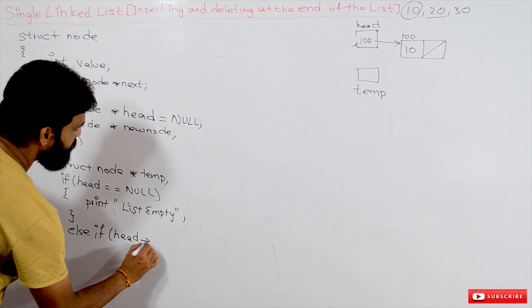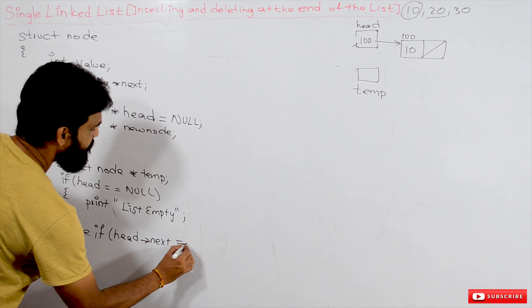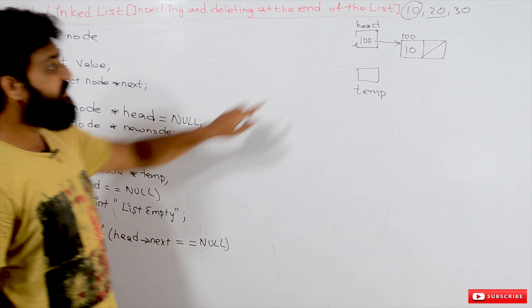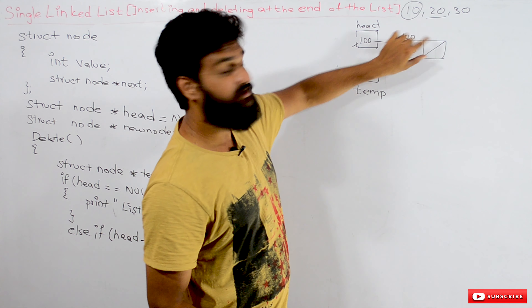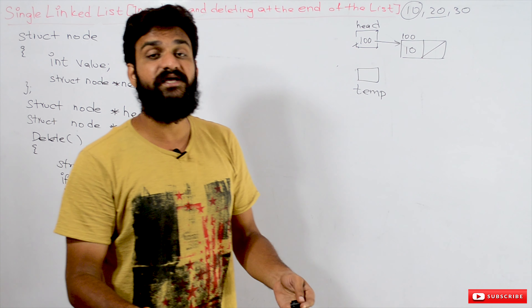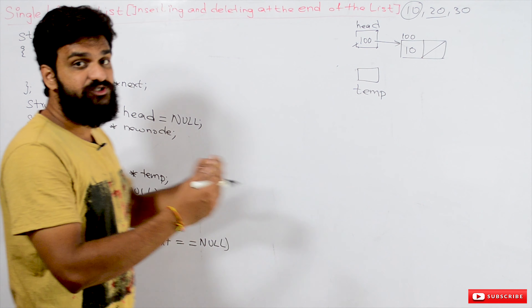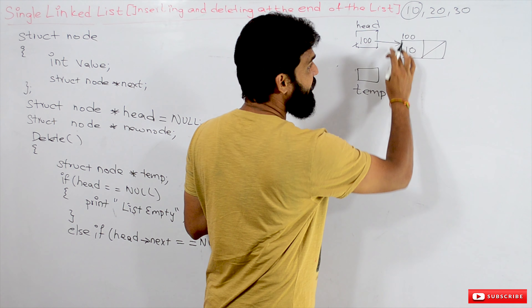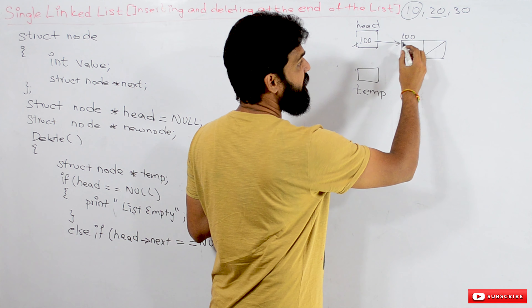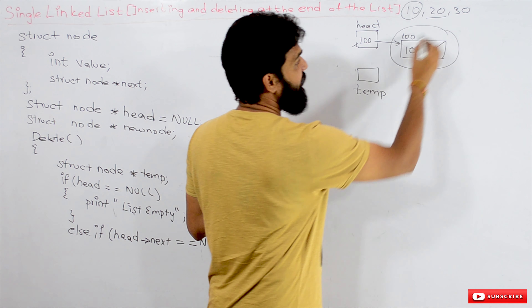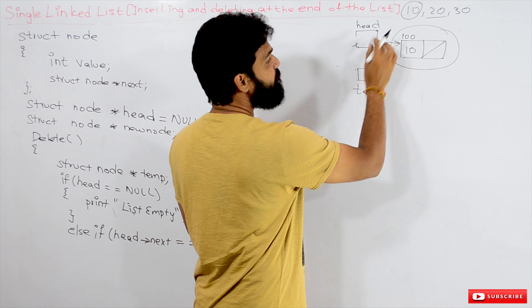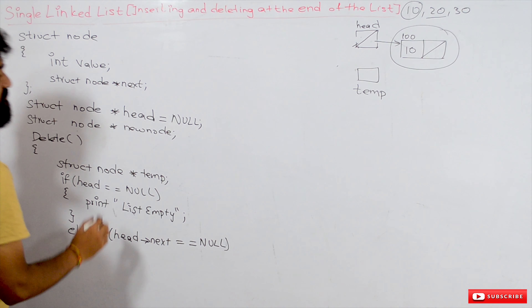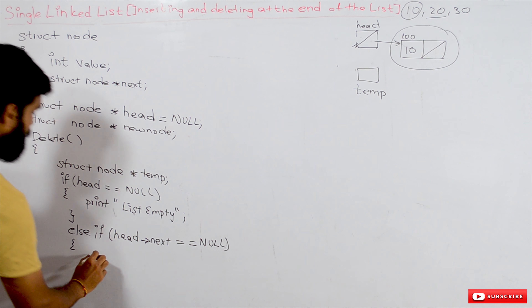First deletion condition: if head == null, it means there are no elements in the list, so we cannot delete anything. In this case, we print 'list empty'.